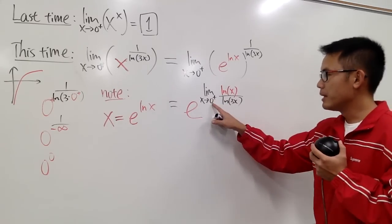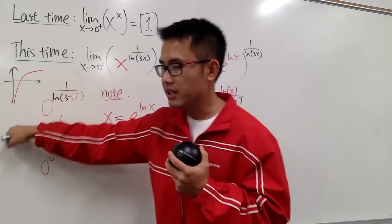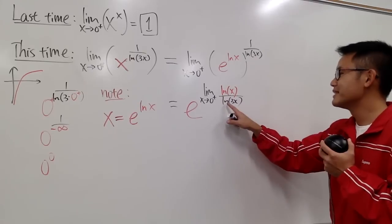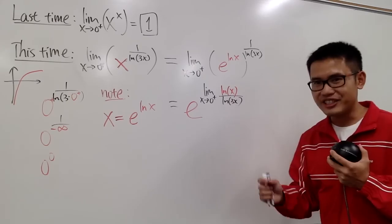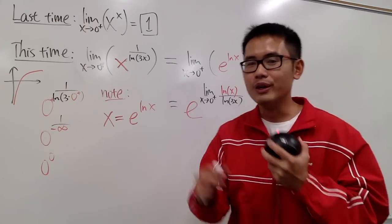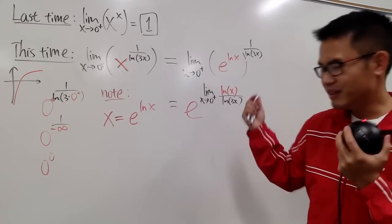Do a real quick check. Plug in 0 plus into here, we get ln of 0 plus, which is negative infinity. Likewise, ln of 3 times 0 plus, we will also get negative infinity. That's good, because we can use L'Hopital's rule for the infinity over infinity situation. Even though they're both negative, it's okay.